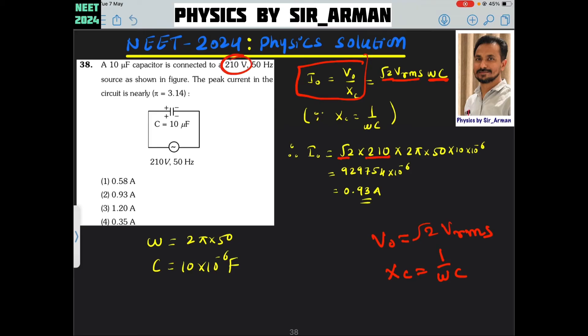Vrms is already given. Whenever this kind of equation is given and frequency is given, the voltage given is the RMS value. So root 2 into 210, then omega is 2 pi into F.